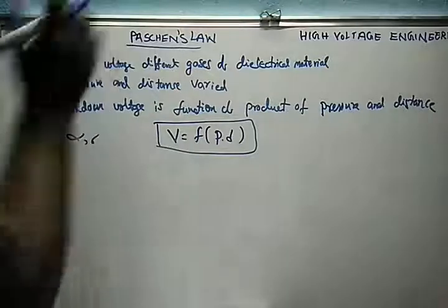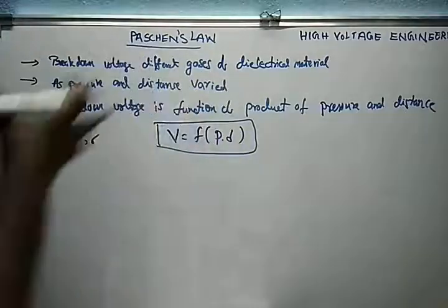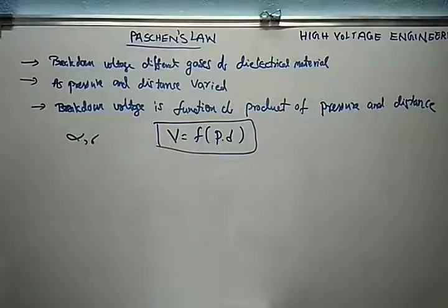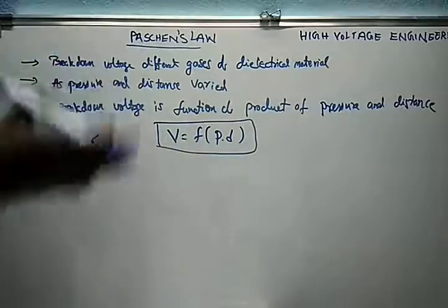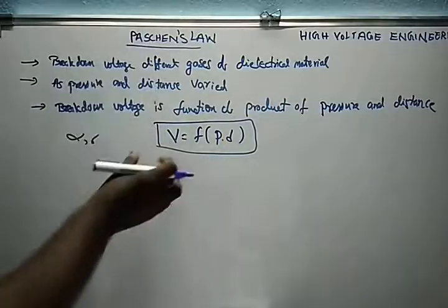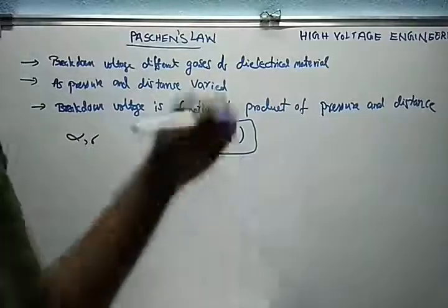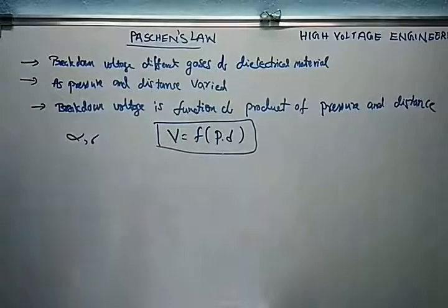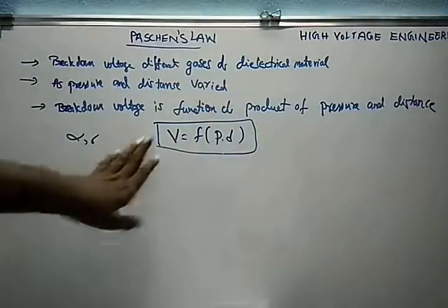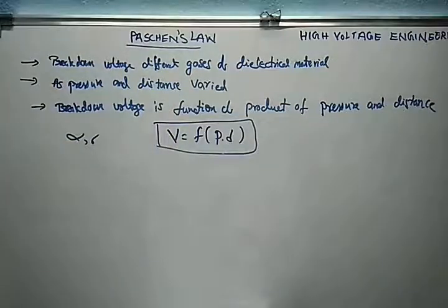In Paschen's law, he stated that as the pressure and distance varied between the two electrode plates, the breakdown voltage also varies. Therefore, Paschen's law is: breakdown voltage is a function of the product of pressure and distance.